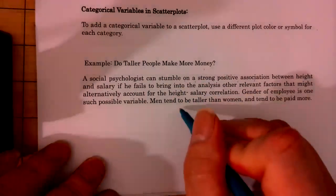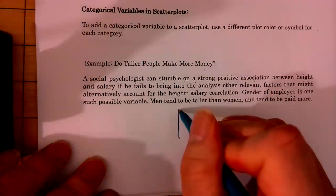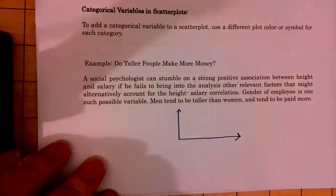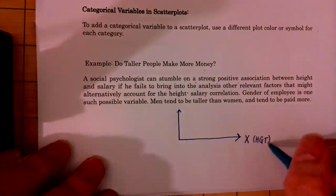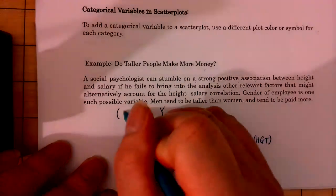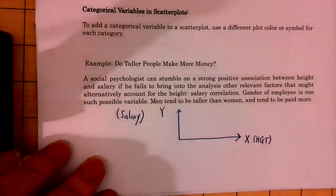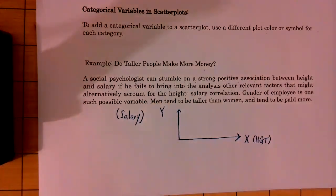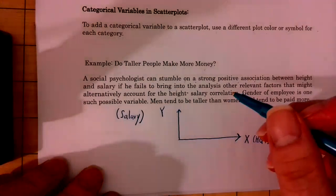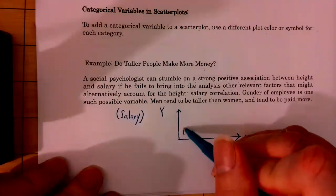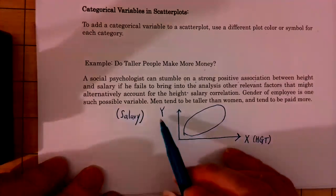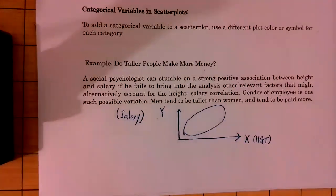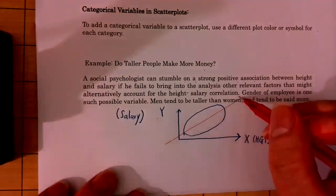This is actually a very famous study done by a sociologist. But this guy made a mistake. X is height, and Y is salary. The sociologist found many pairs of people — their height and their salary — and found there is a very strong positive association.